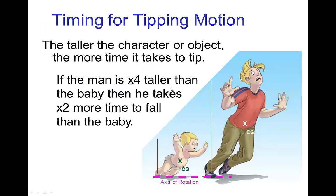To understand the timing of tipping motion, you have to remember that the taller an object is, the more time in terms of the number of frames it's going to take for that object to tip over. If we start the man and the baby at the same angle and they are tipping over, if the man is four times taller than the baby, then the man takes twice as much time, twice as many frames, before he hits the ground. If the man takes eight frames to hit the ground, the baby is going to hit the ground in four frames.